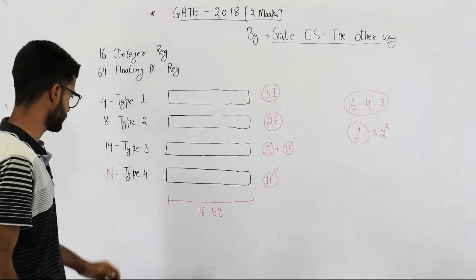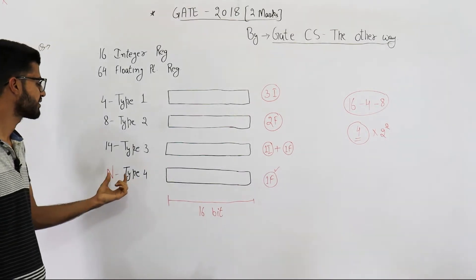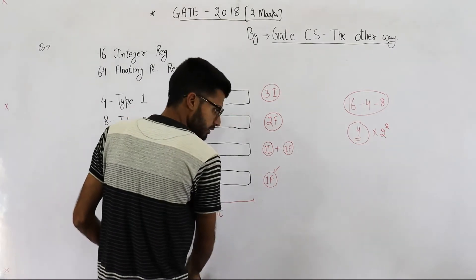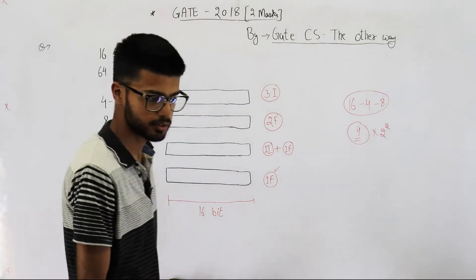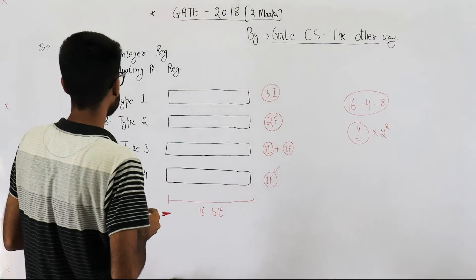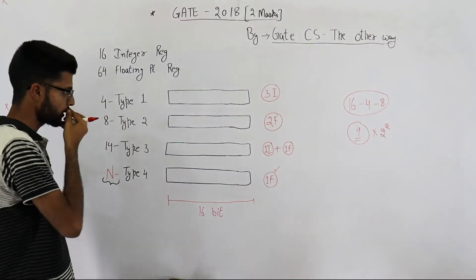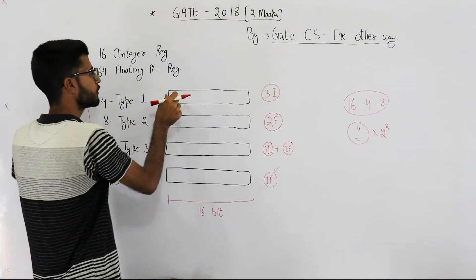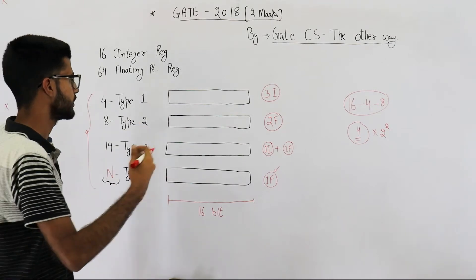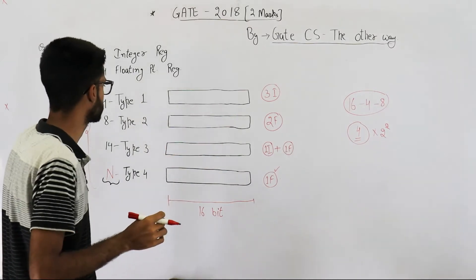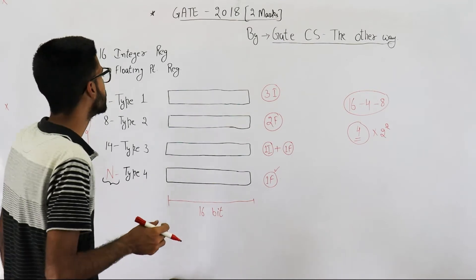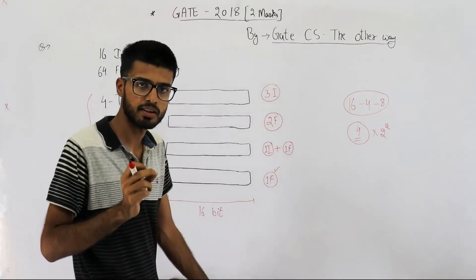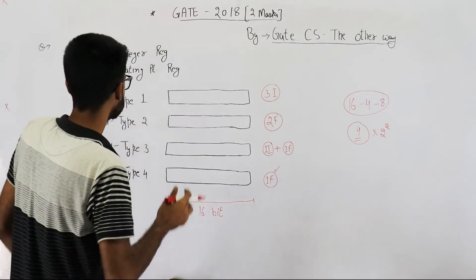So Type 4 has a total of N instructions and we are required to determine the maximum value N can take. Whenever you are given that a processor supports more than one type of instruction, you can do this in two ways. The first way is to fix two bits to determine the type of instruction. But a better approach is to not fix any bit for determining the instruction type — meaning the opcode itself will determine the instruction type.